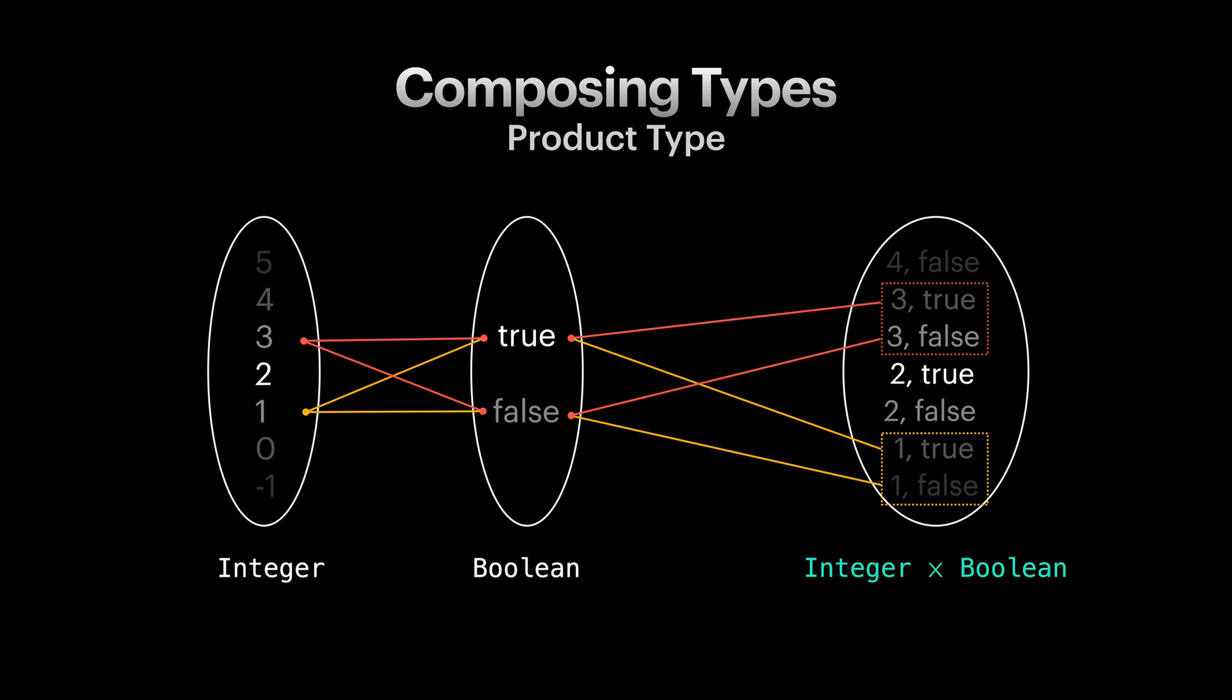The resulting composite type is called product type and is shown with the product symbol. Can you guess why this composition is called product? Well, the number of values in the resulting type, the cardinality of that type, is the cardinality of the integer type times cardinality of the boolean type.